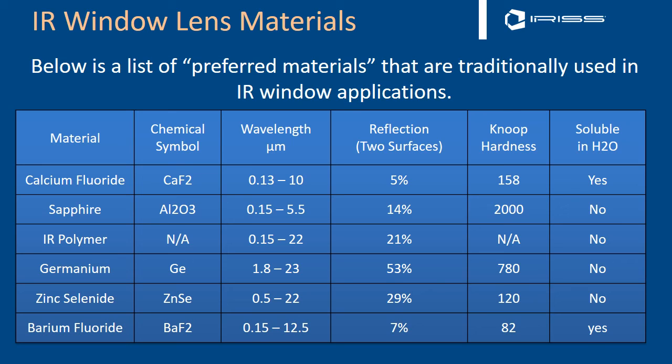Sapphire is what we used when we worked in the mid-wavelength — it's a great material. It works between 0.15 and 5.5 microns, has a Knoop hardness of 2000, and has an infrared transmission in the high 90s across the whole mid-wavelength range. Infrared polymers work between 0.15 and 22 microns, are not soluble — which is a big advantage — very flexible, and a good industrial material.